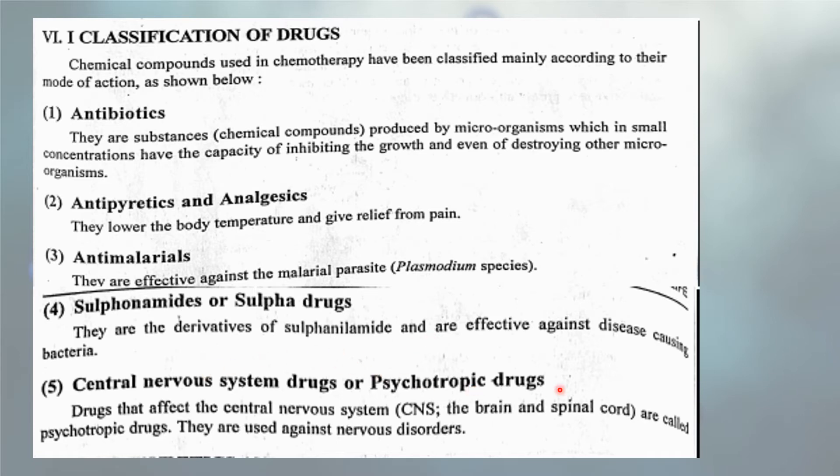Central nervous system drugs, or psychotropic drugs, affect the central nervous system — the brain and spinal cord. They are generally used against nervous disorders. Those are the broad classifications of drugs.